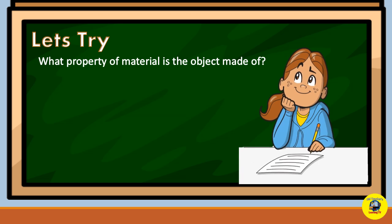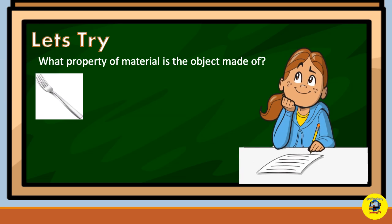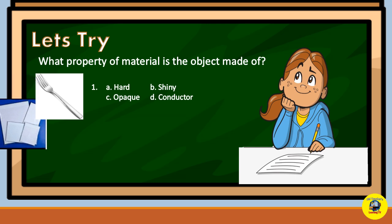How about the third picture? What property of material is the object made of? Is it hard, shiny, opaque, or conductor?